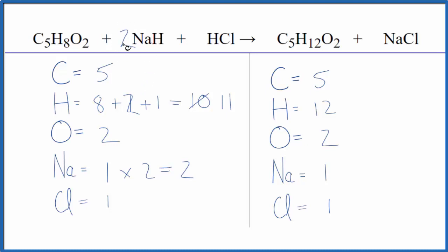I could change this to three, but if I change this to a two, that'll give me my twelve. So the hydrogens are balanced. I have one times two for the chlorine atoms.